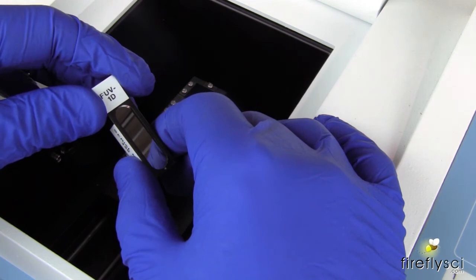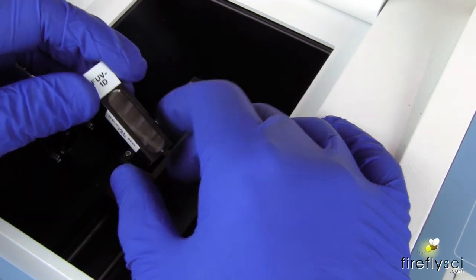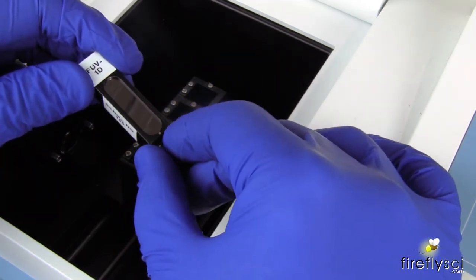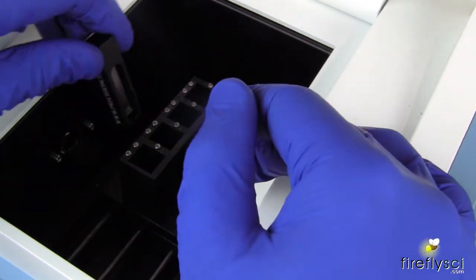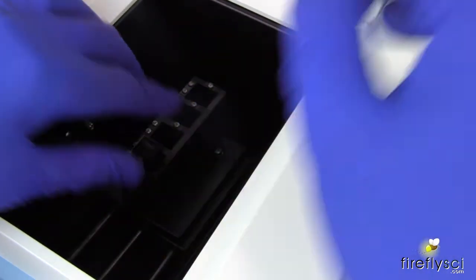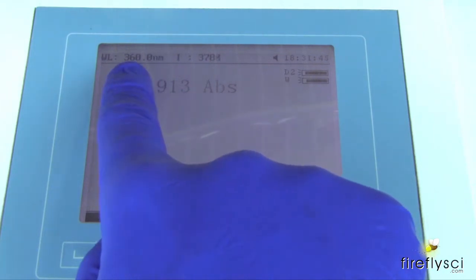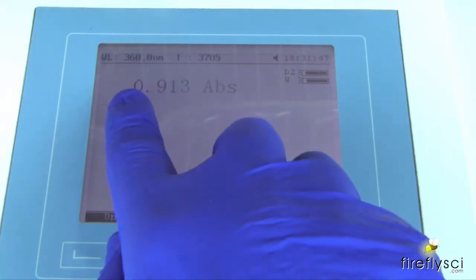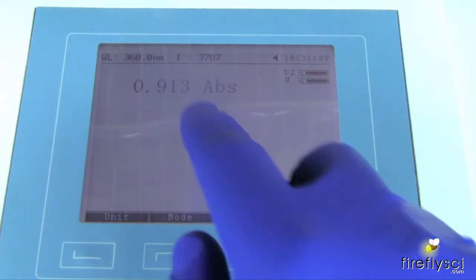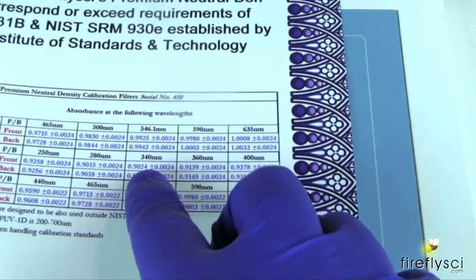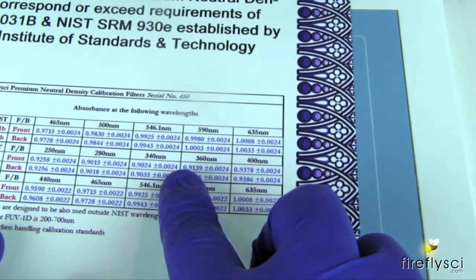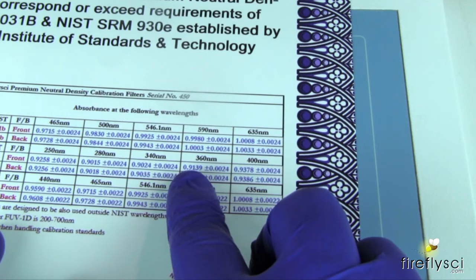Now I'm just going to insert the FUV-1D filter with the white dot here facing the light source of the spectrophotometer. And now we'll compare the reading on the spectrophotometer to the certificate of calibration. So again, we're looking at 360 nanometers and our machine showing a reading of 0.913. And we're doing the front scan right now, so here we go, 0.913 is perfect.